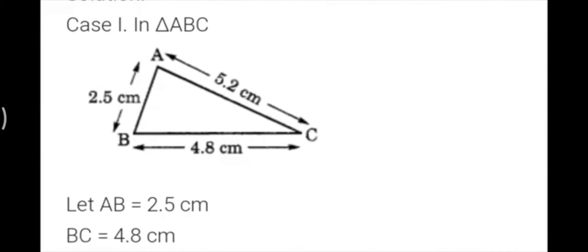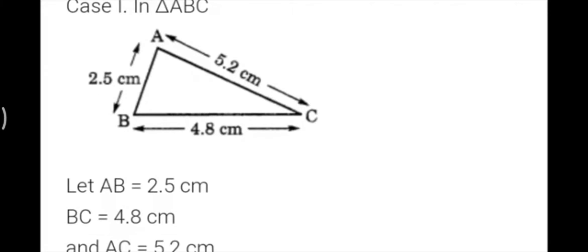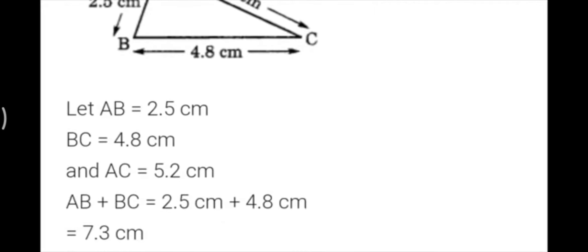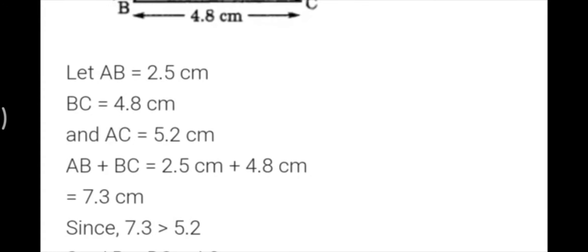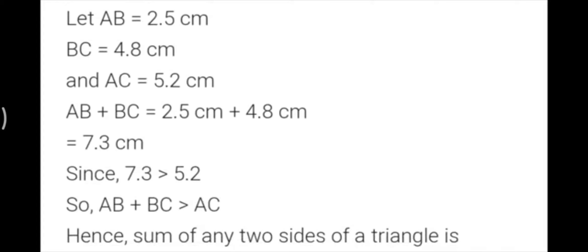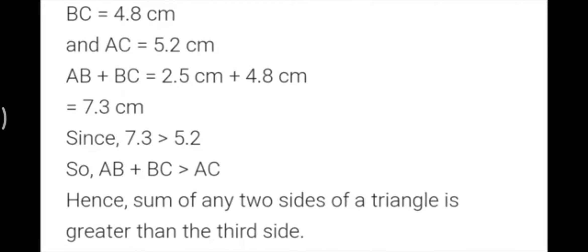This is the first triangle I have drawn, triangle ABC. When I measured it: AB is 2.5 cm, BC is 4.8 cm, and AC is 5.2 cm. Now taking two sides, AB plus BC equals 2.5 plus 4.8 equals 7.3, and the third side AC is 5.2. You can see the sum of two sides, 7.3, is greater than the third side, 5.2.